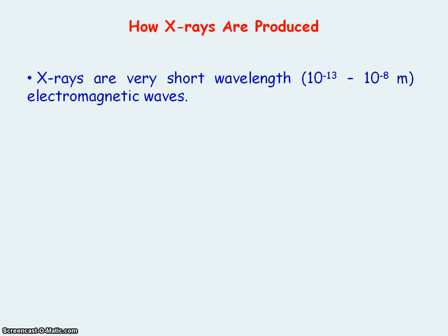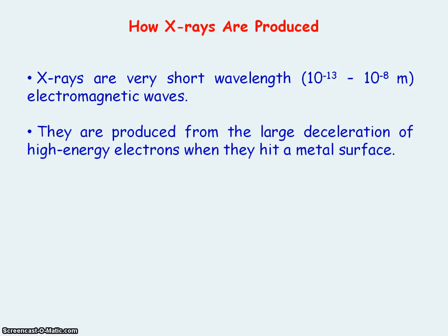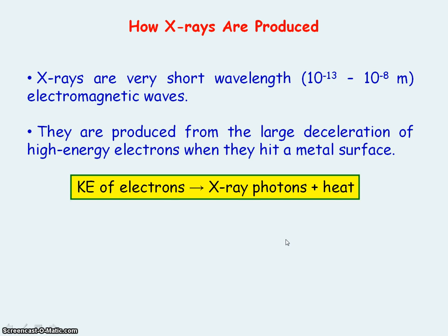X-rays have very short wavelengths, and they're produced from the large deceleration of high-energy electrons when they hit a metal surface. The large deceleration of the electrons results in a loss in kinetic energy, and this kinetic energy is transformed into the X-ray photons and heat.